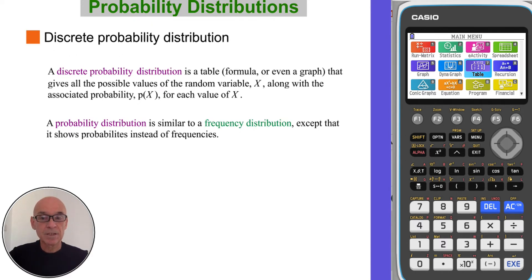A discrete probability distribution is a table, usually, but sometimes a formula or even a graph that gives all the possible values of that random variable, along with the associated probabilities. So a probability distribution is similar to a frequency distribution, except that it shows probabilities instead of frequencies.